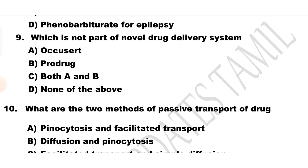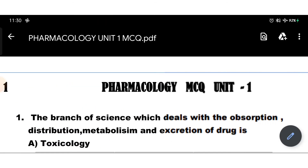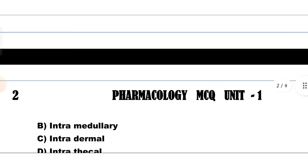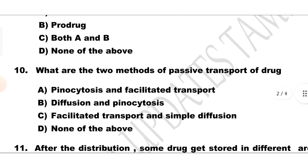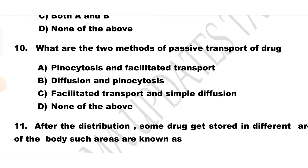Question number 10. What are the two methods of passive transport of a drug? Option A: Pinocytosis and facilitated transport, Option B: Diffusion and pinocytosis, Option C: Facilitated transport and simple diffusion, Option D: None of the above.